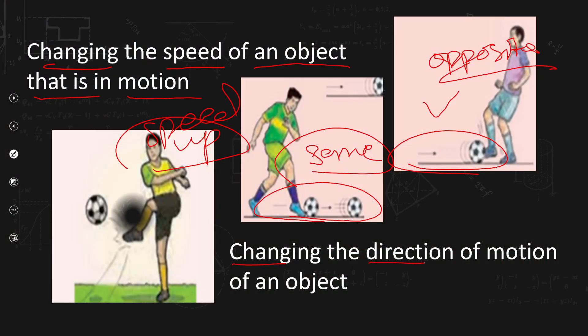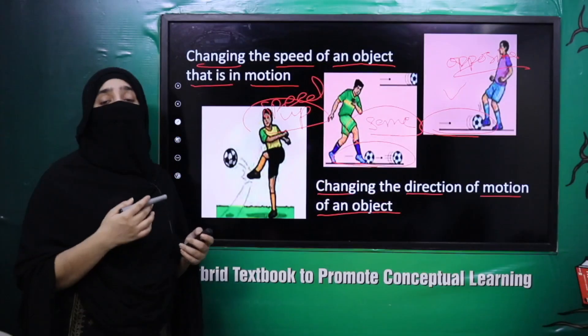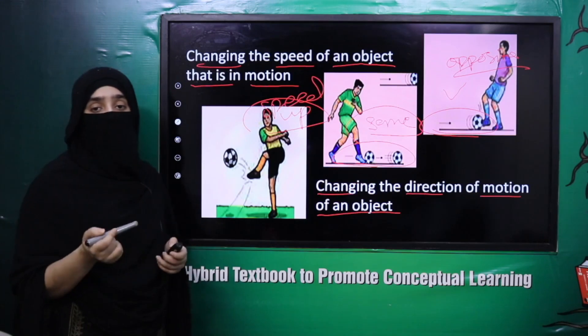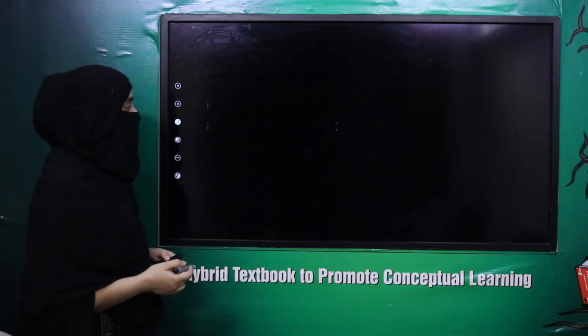Next is changing the direction of motion of an object. Jab aap kisi moving object ko kisi bhi side se force apply karte hain, to wo apni direction change kar leta hai. Is tarah se force ka uski movement pe effect hota hai ki wo moving object ki direction ko change kar deti hai.